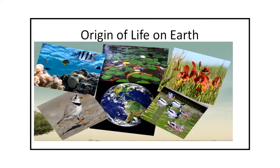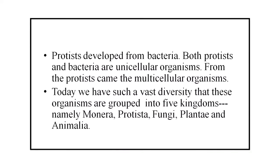Protists developed from bacteria. Both protists and bacteria are unicellular organisms. From the protists came the multicellular organisms. Today, we have such a vast biodiversity that these organisms are grouped into five kingdoms, namely: Monera, Protista, Fungi, Plantae and Animalia.